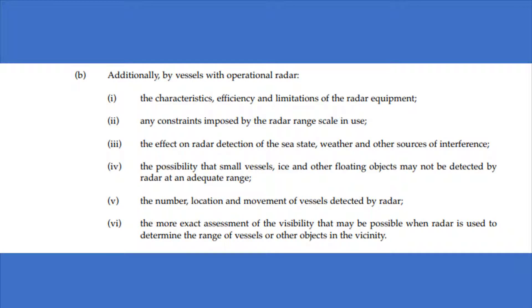Part B: Additionally, by vessels with operational radar, the characteristics, efficiency and limitations of the radar equipment. Here, we're talking about the positioning, the beam length, pulse width, all that sort of stuff.